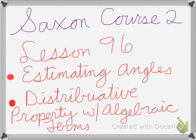Saxon Course 2, Lesson 96 is on estimating angles and distributive property with algebraic terms.